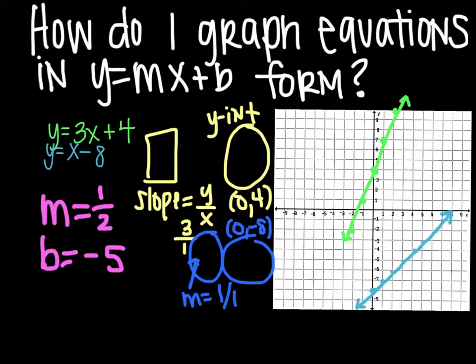And that would be y equals 1 half x minus 5. But you know your slope is 1 half and b is negative 5, which means 0, negative 5 is on our axis.